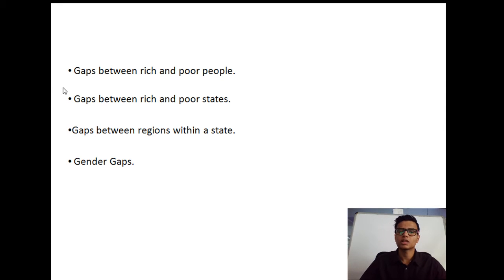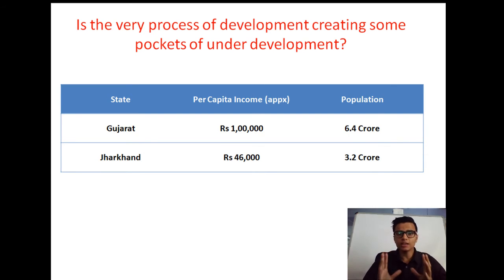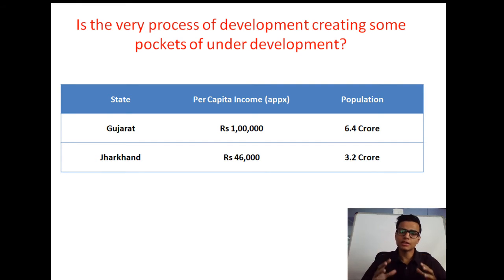Take the example of gaps between rich and poor states in India. India has been growing at 6.5 to 7 percent, but are all states growing at a robust rate? Gujarat has a per capita income of rupees 1 lakh with a population of 6.4 crore, while Jharkhand has a population of exactly half — 3.2 crore — yet its per capita income is less than 50 percent of Gujarat's. So India is growing at a robust rate but not all states are performing well. This is not inclusive growth.